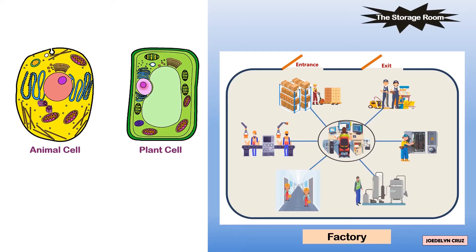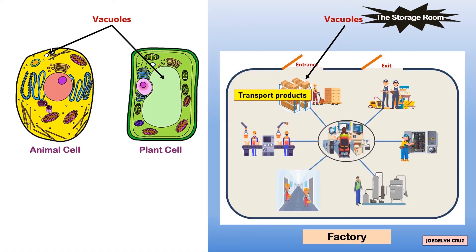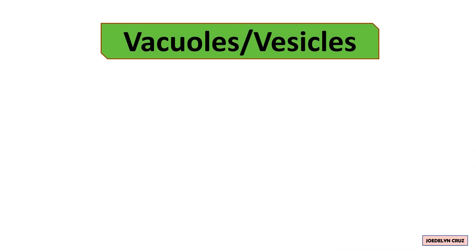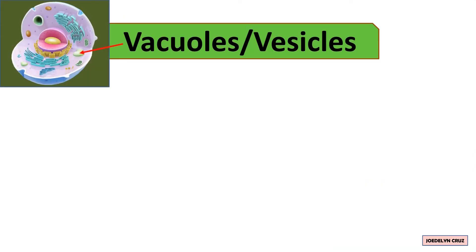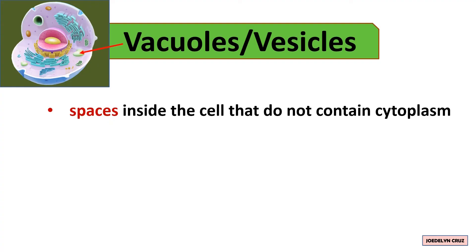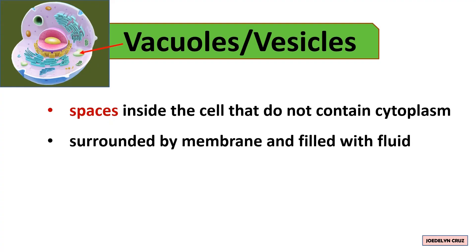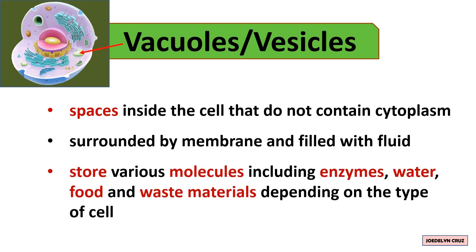The storage room represents vacuoles. In here, the products of the factory are kept and transported out of the factory. Vacuoles in animal cells are small and are called vesicles. Vacuoles are spaces inside the cell that do not contain cytoplasm. They are surrounded by membrane and filled with fluid, storing various molecules including enzymes, water, food, and waste materials depending on the type of cell.